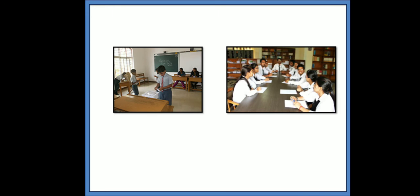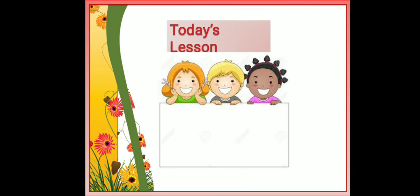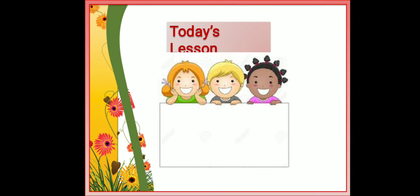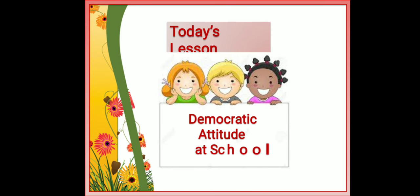So let's see some pictures here. Can you see here? It's a classroom environment. The students are doing something — they are discussing. So what is our topic? It's democratic attitude at school.